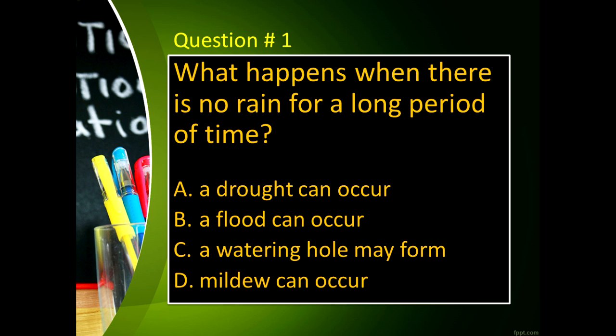Question number 1: What happens when there is no rain for a long period of time? Letter A, a drought can occur. Letter B, a flood can occur. Letter C, a weathering hole may form. And letter D, dew can occur.